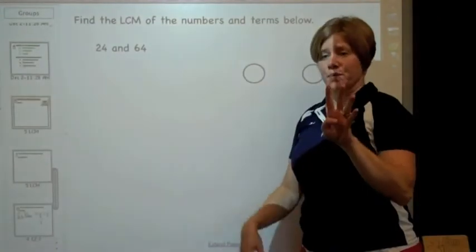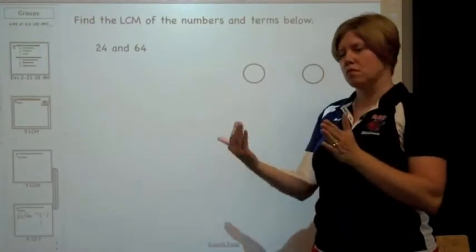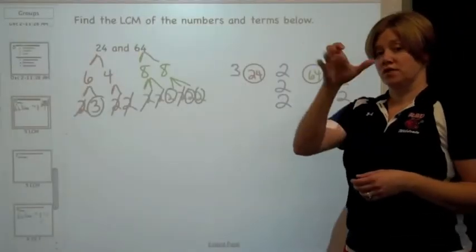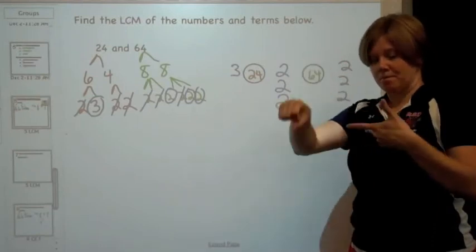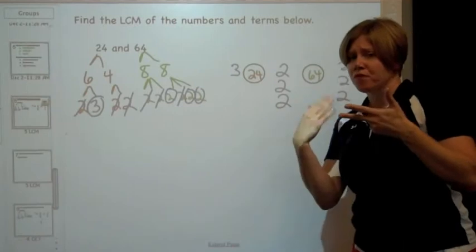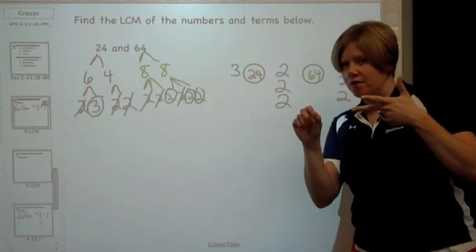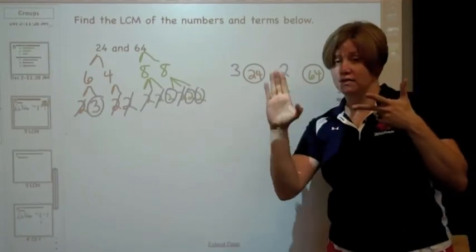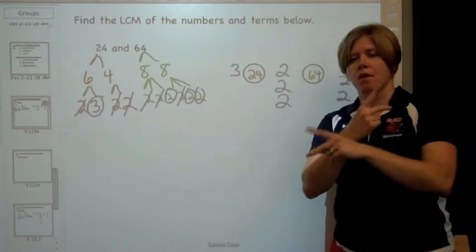So a more complex example, 24 and 64. I'll do the prime factorization. And before, the GCF, I did the prime factorization, did the double-bowl map, and then for the GCF, I multiplied the common factors. But now I'm doing the LCM, so the third step is a little bit different.